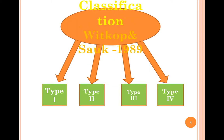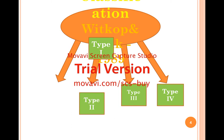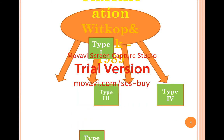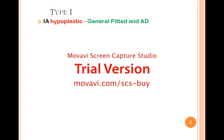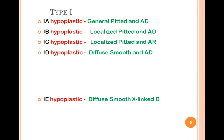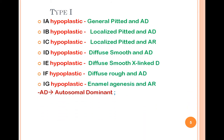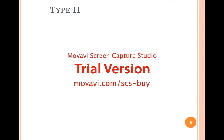Regarding the classification of Amelogenesis Imperfecta, the Witkop classification developed in 1980-81 identifies four types: Type 1, Type 2, Type 3, and Type 4. Type 1 has further subclassifications: Type 1A, B, C, D, E, F, and G. These include autosomal dominant disorders, autosomal recessive, X-linked dominant, and X-linked dominant variants.